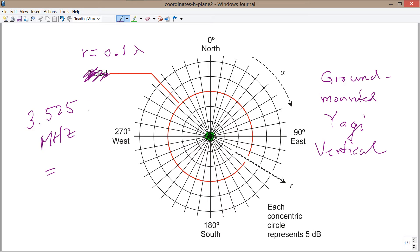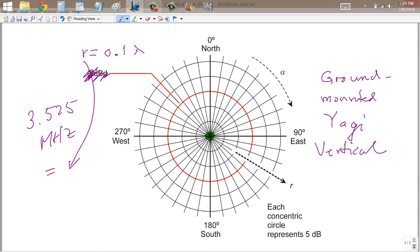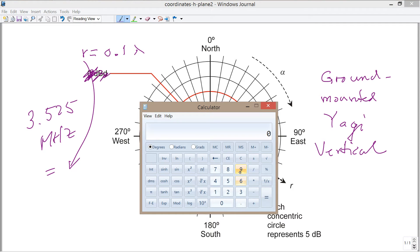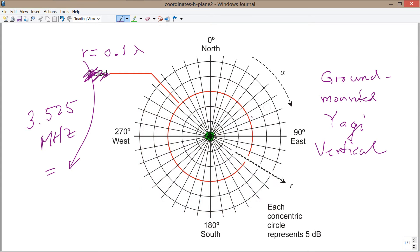At 3.525 MHz, that radius is going to be approximately, well, let's just go ahead and figure that out. A wavelength in free space at any particular frequency is 984 divided by that frequency, so that will give you 279 feet. Now, you divide that by 10, and you get about 28 feet. So, the radius here equals 28 feet, that is this radius, right there. And then,